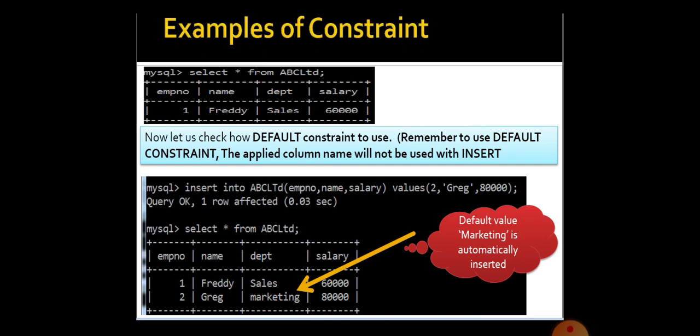Now check what the content of the table. To know the content within a table, we need to give the query like select star from table name. Here the table name is ABC Limited. Look at the change. What is happening here? The compiler to Greg department, even though we are not given the value for department, it allows the user to take marketing as a default value.